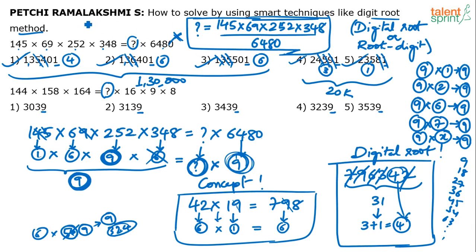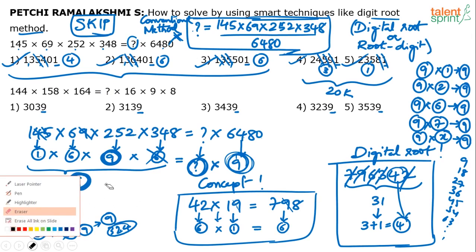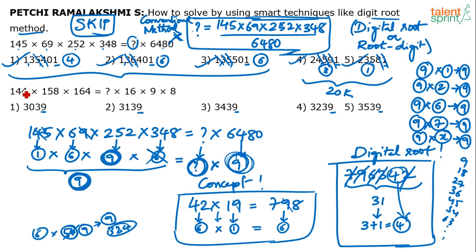If this method is time consuming, skip this question and go to the next one. But if you cannot do this simplification in 40 seconds, you are not fit for the exam. This is a conventional method — you may not be happy applying it always — but in such a question, even with the conventional method, you should not take more than 40 to 45 seconds. You just have to do cancellations as quickly as possible and simplify. Now let's try the digital root method for the second question. For 144, the digital root is 9, and the moment I get 9, the overall digital root on the left-hand side is going to be 9.